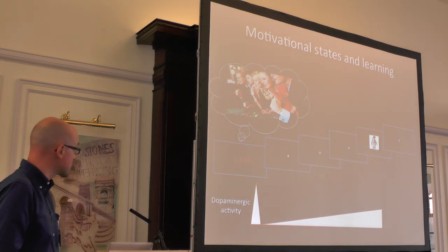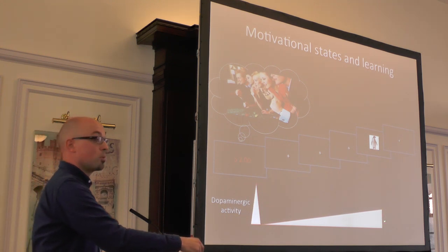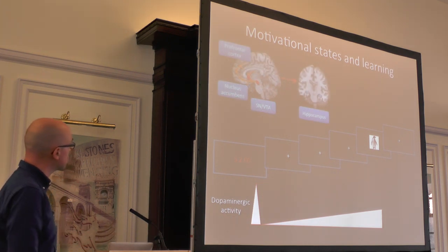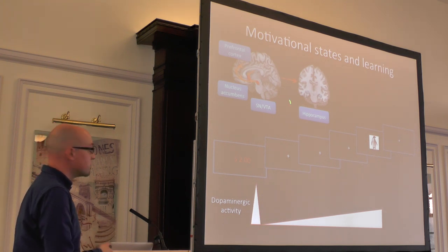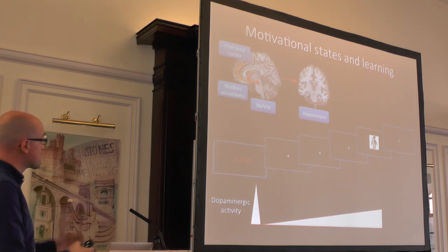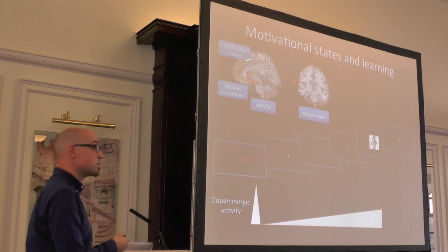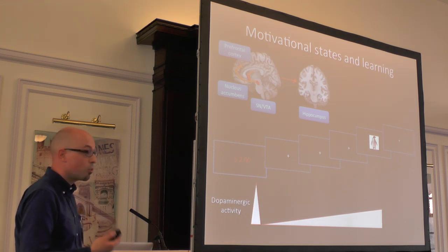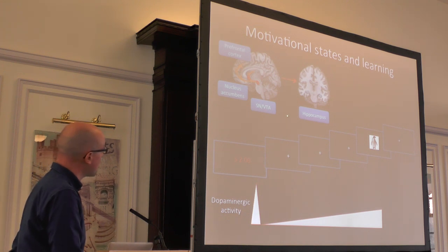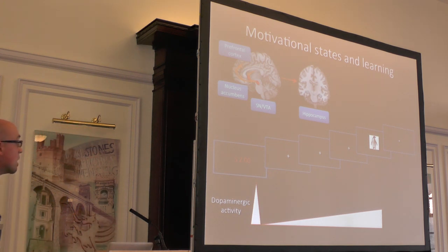We know a lot about the dopaminergic response from animal studies, and there is more work emerging with humans. It is thought that the dopaminergic response is elicited by the reward cue itself, and then there is a slow ramping of dopaminergic activity toward the information. The key areas in this circuit are the VTA specifically and the release of dopamine into the nucleus accumbens, which is an important hub in the brain's reward circuit. The hippocampus is important for forming long-lasting memories, and several theories suggest these areas form a loop between the VTA and hippocampus to facilitate learning.